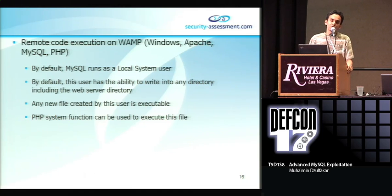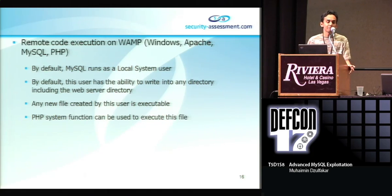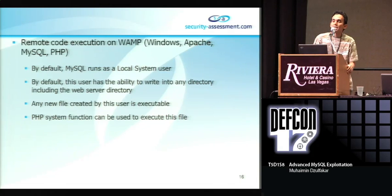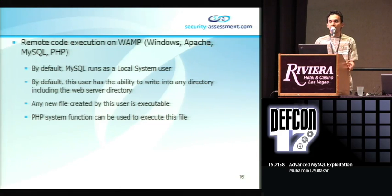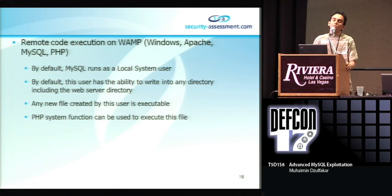Remote code execution on the WAM environment has fewer limitations compared to LAM. By default, MySQL runs as local system on Windows, and this user is allowed to write anywhere in the web server directory. So if we find a WAM system, we can simply write our arbitrary file into one of the web server directories, then use the same technique as on LAM — using a PHP system function to execute the arbitrary file.